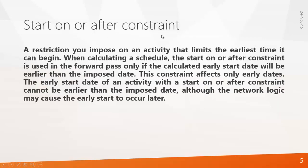The Start On or After constraint is a restriction you impose on an activity that limits the earliest time it can begin. When calculating a schedule, this constraint is used in the forward pass only if the calculated early start date will be earlier than the imposed date. This constraint affects only early dates — the early start date cannot be earlier than the imposed date, although network logic may cause the early start to occur later.